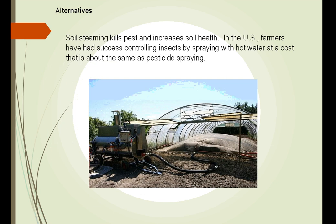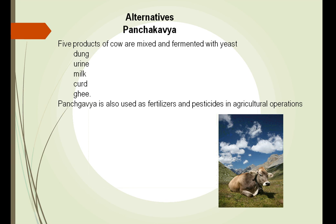Instead of using chemicals, we can use soil steaming. We have tried this in the U.S. and it controls insects at about the same price as a pesticide, however it is more labor-intensive. Another method used in India is something called panchakava, where five products of the cow — dung, manure, urine, milk, curd, and ghee — are mixed together, allowed to ferment, and used as a fertilizer and pesticide.